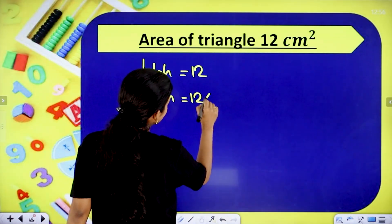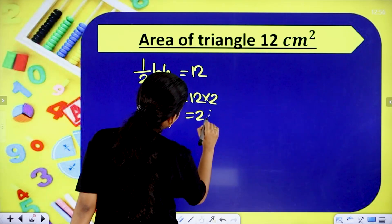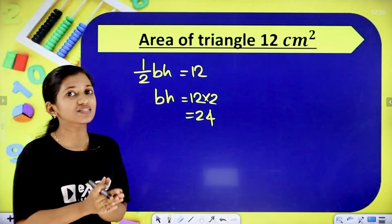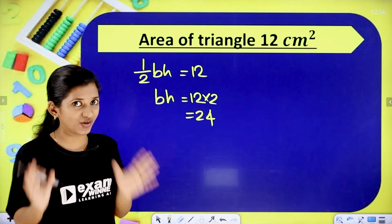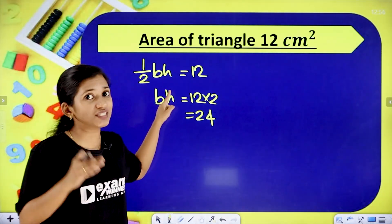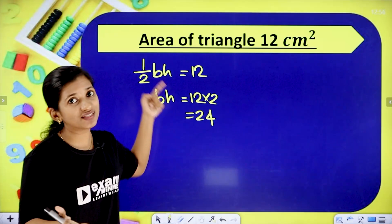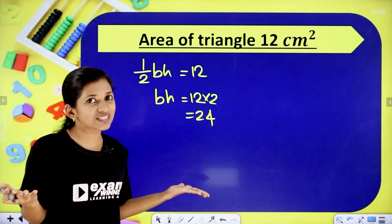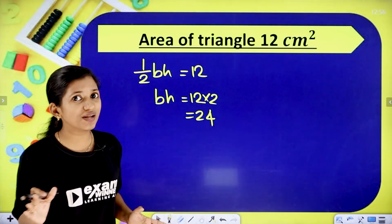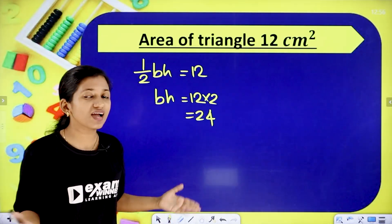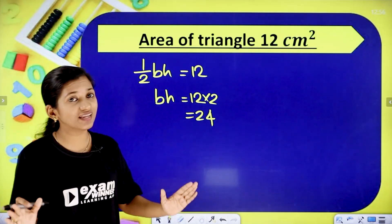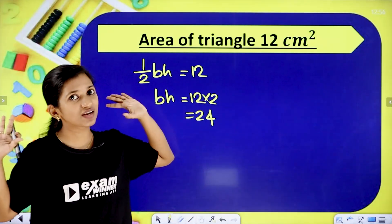12 divided by 2 equals 24, divided by 2 gives us 12. So the area of the triangle is 12 cm². If we multiply the base and height, we multiply to get 24. Then half of 24 is 12. It is easy to see that if we multiply the numbers to get 24, the area will always be 12 cm².